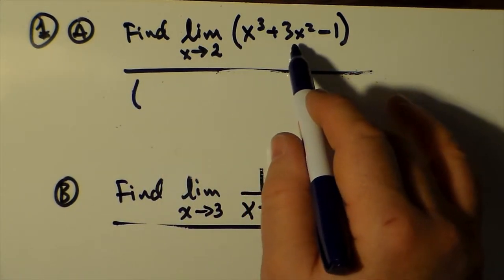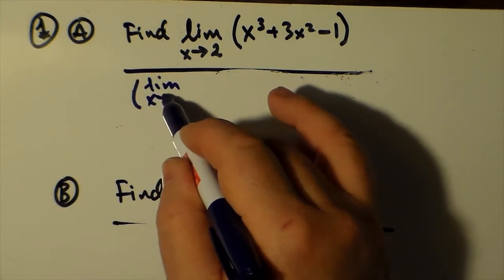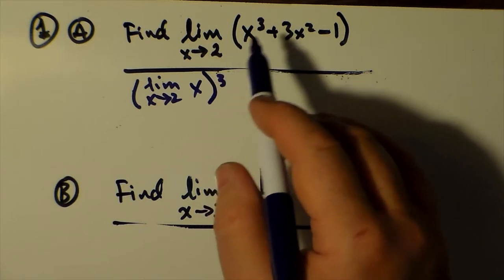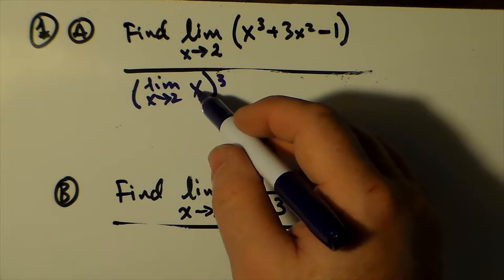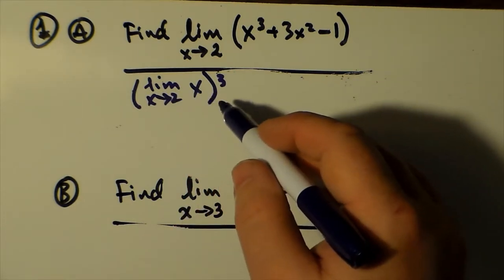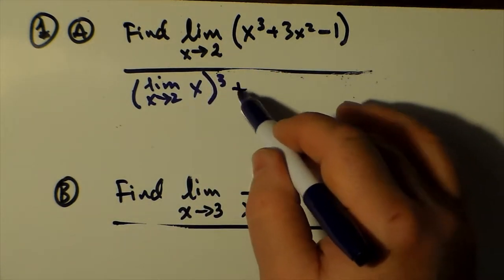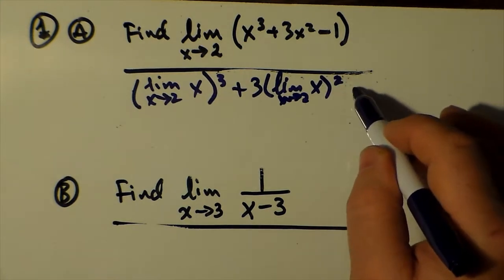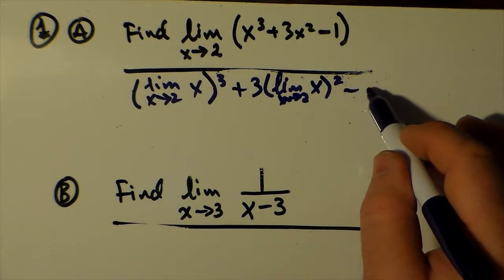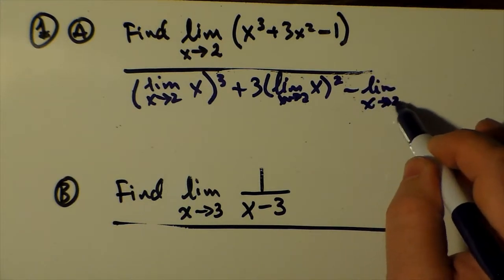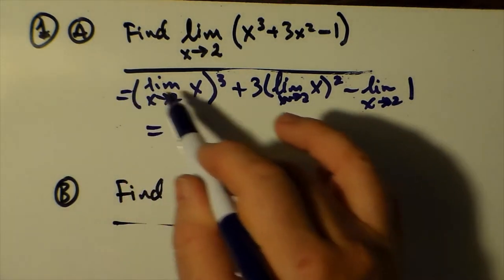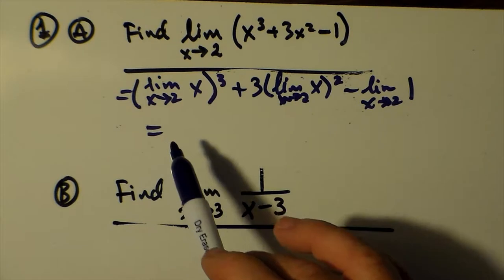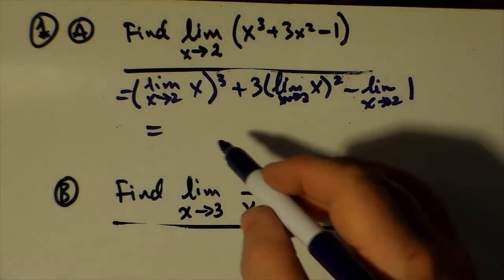We have the limit as x approaches 2 of x cubed. We can rewrite it using the rule that the limit of x raised to a power is the limit of x with the whole limit raised to that power, plus three times the limit as x approaches 2 of x, all squared — same rule repeated — minus the limit as x approaches 2 of the constant 1.